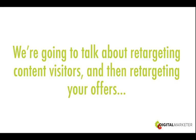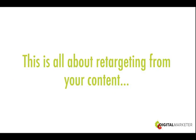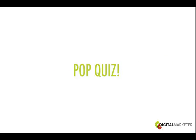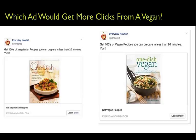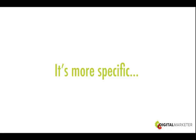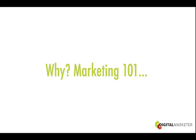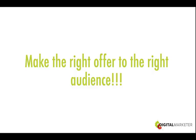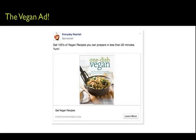We're going to talk about retargeting content visitors and retargeting your offers. Pop quiz: which ad would get more clicks from a vegan? The ad on the left says 'get hundreds of vegetarian recipes you can prepare in less than 20 minutes,' or 'get hundreds of vegan recipes you can prepare in less than 20 minutes.' Obviously the vegan ad, because we made the right offer to the right audience — it's more specific.